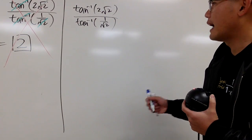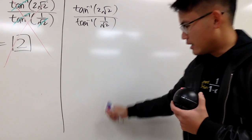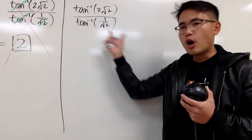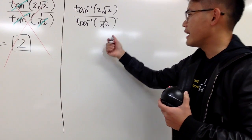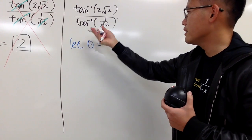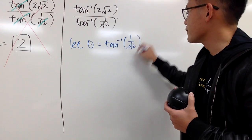Hmm. I think I would like to just start to simplify this guy right here. I think I would do it like this. Remember, the output of an inverse trig function is an angle. So I would say, let that angle be θ. So, θ equals the inverse tangent of 1/√2, like this.